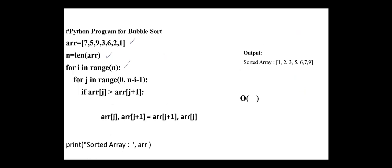We start the external loop for i in range n, and the internal loop ranging from 0 to n minus i minus 1. Then we compare array j with array j plus 1.